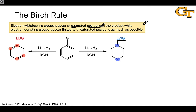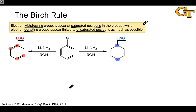On the other hand, if the group attached to the benzene ring is electron donating, that group will end up linked to an unsaturated position in the product — one of the carbons that does not formally undergo reduction. Having stated this rule, we really want to look for the underlying rationalization of why this happens. This will become crystal clear once we talk about the mechanism.